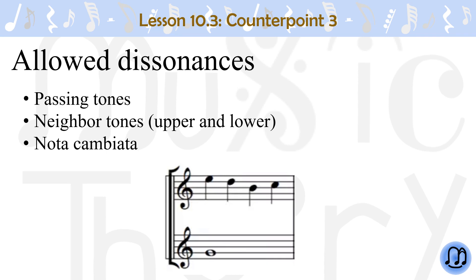In the example shown, the first note is an E, a consonance. The second note is a step down to a D, also a consonance. The third note is a skip down to a B, which has to be a consonance. And the last note is a step up to a C, which is dissonant.